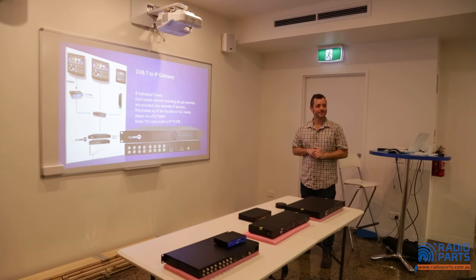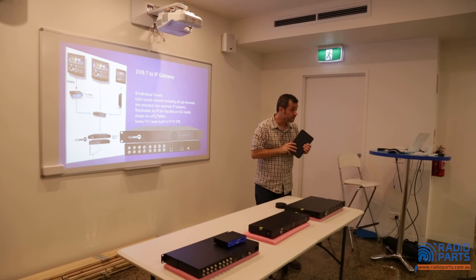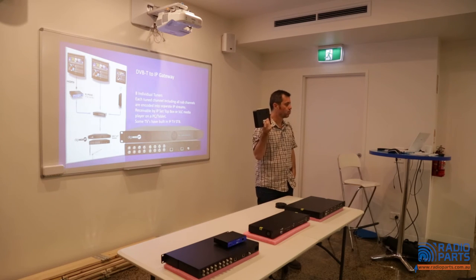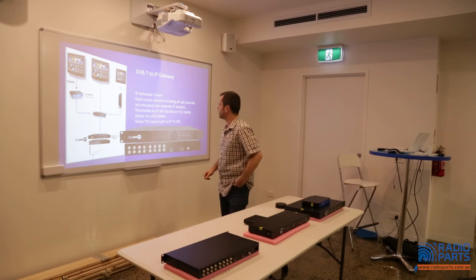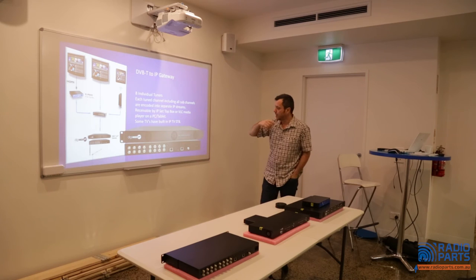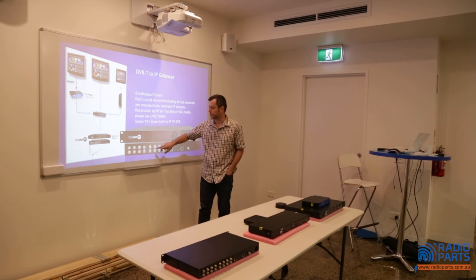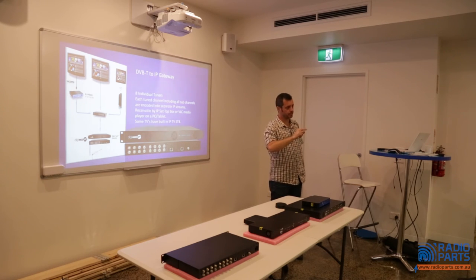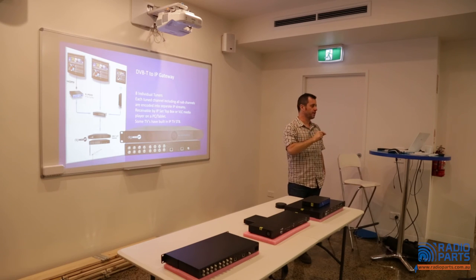On the DVB-T to IP gateway — in a typical situation where you only had Cat5 and needed to put all the free-to-air channels in there, previously you'd have to use an alternative system or use one of these IP encoders for each channel you wanted to screen. That's where this little product comes in. Each one of those ports is a TV tuner — and there are eight of them. The antenna goes in, you link across from one tuner to the next. Each tuned channel becomes an IP stream, including all the multiplex channels. So channel 10 has 10, 11, 12, et cetera — each one is a separate IP stream.